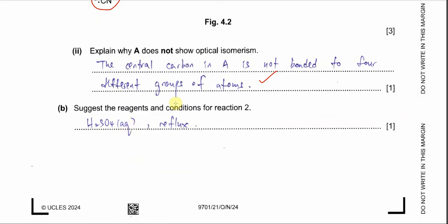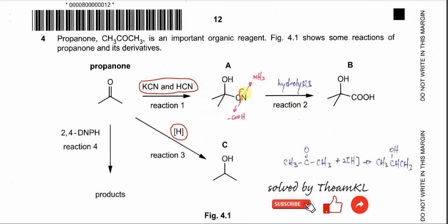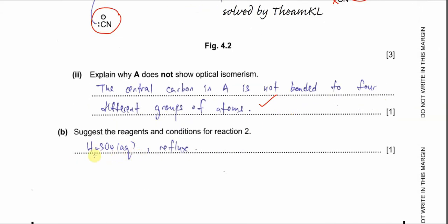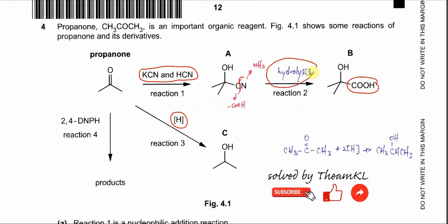Part B: suggest the reagents and conditions for reaction 2. Reaction 2 is hydrolysis — the nitrile group undergoes hydrolysis to form carboxylic acid. To form carboxylic acid, acid conditions are required. Use aqueous H₂SO₄ with reflux. Reflux is necessary because hydrolysis takes time.